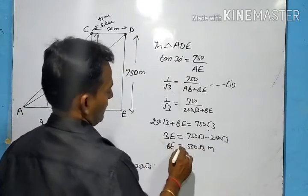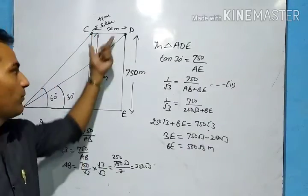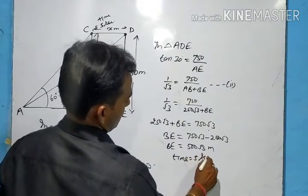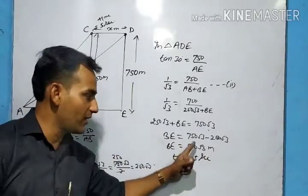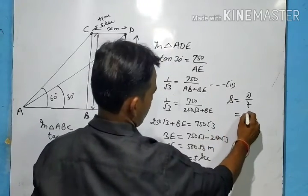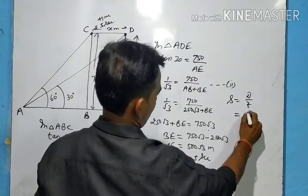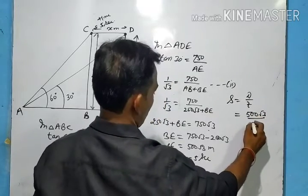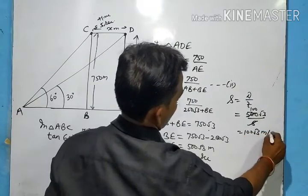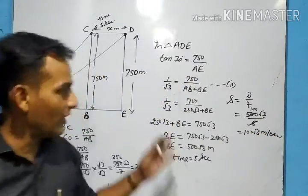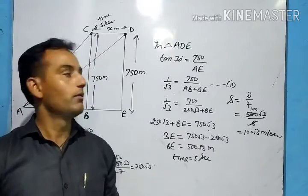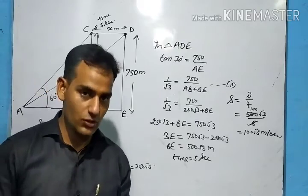BE is the distance covered by the aeroplane in 5 seconds. Distance = 500√3 meters, time = 5 seconds. Speed = distance/time = 500√3/5 = 100√3 meters per second. That is the speed of the aeroplane. These types of questions are very important in height and distance — please practice them, solve them. Thank you so much, see you soon.